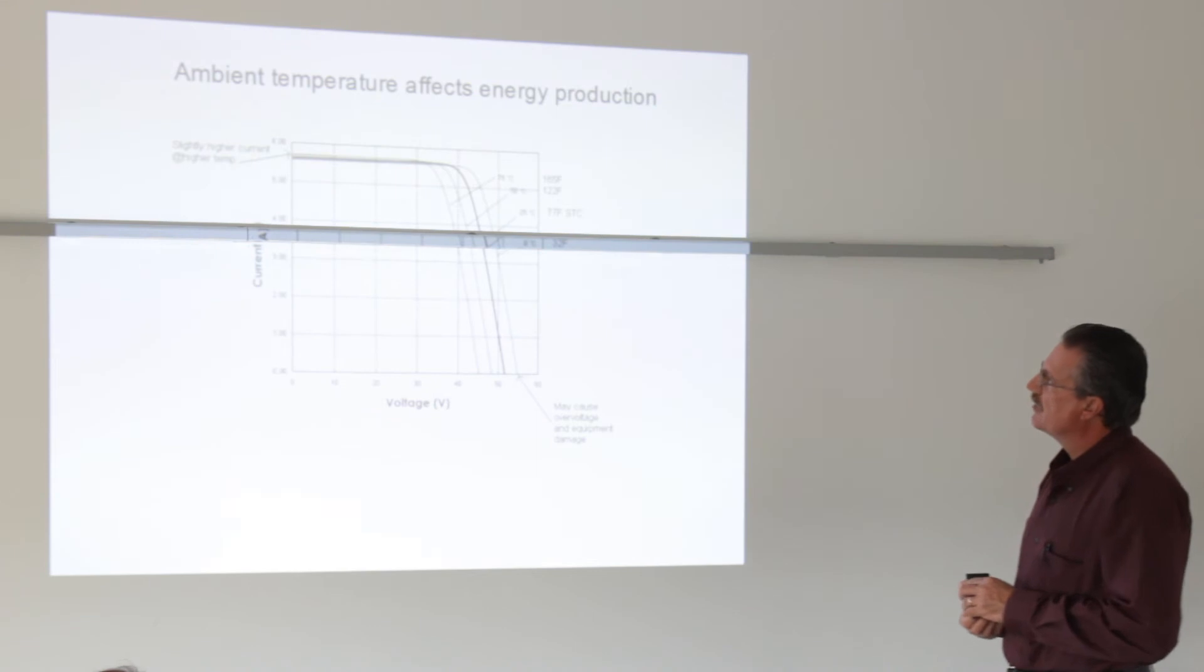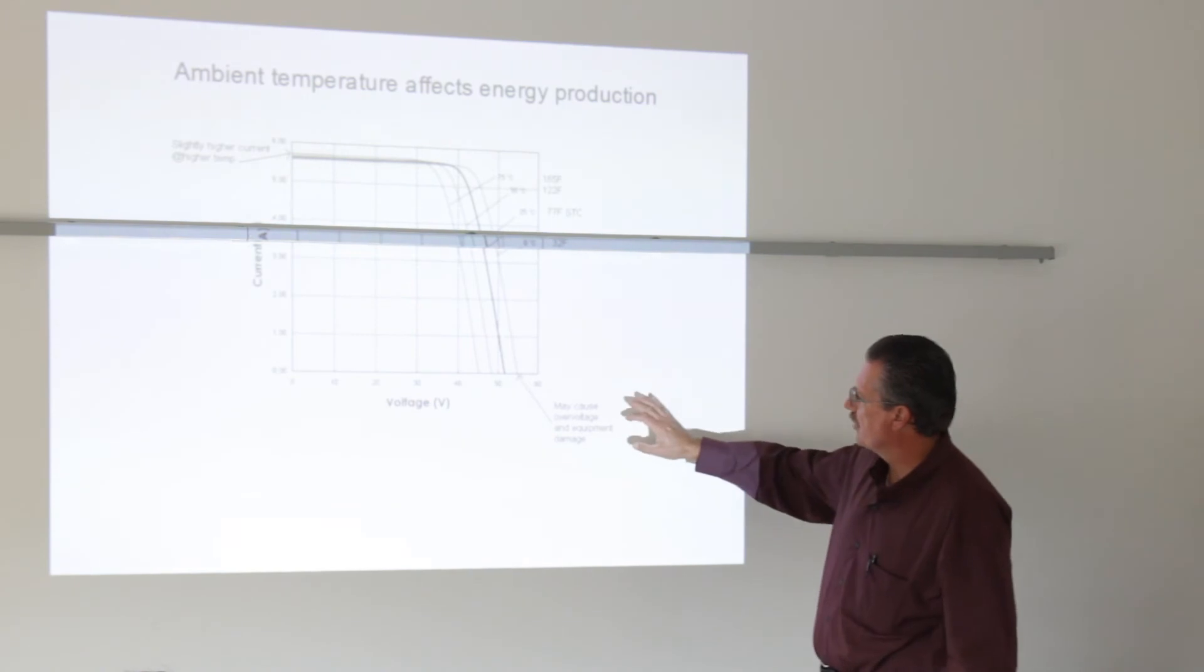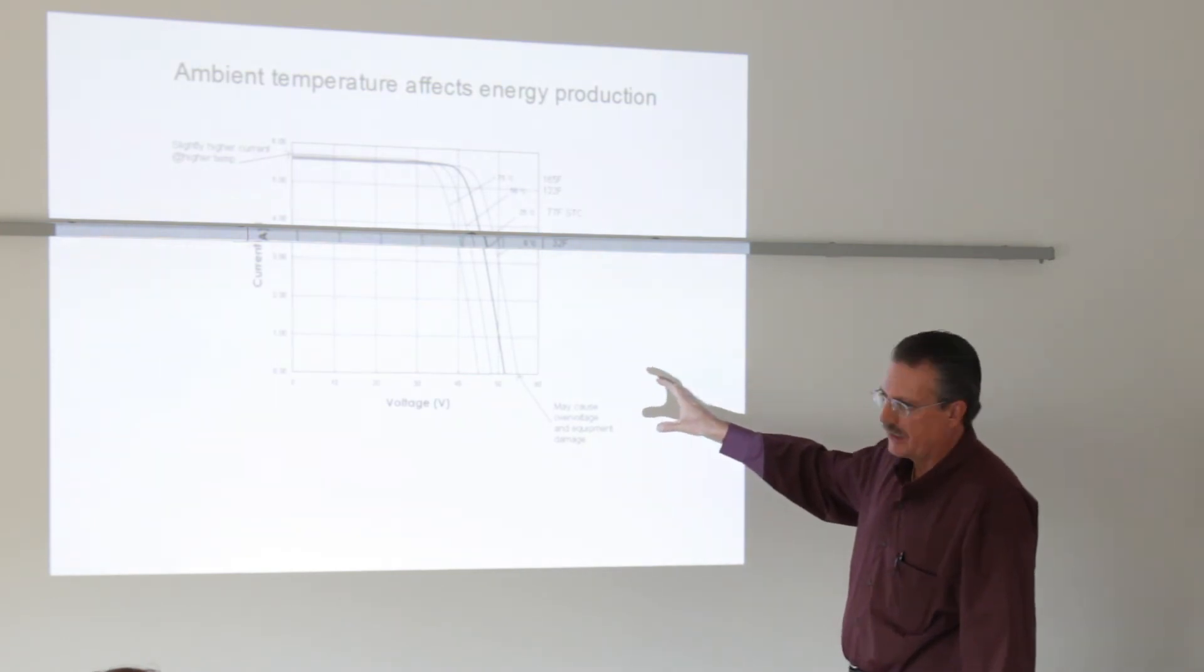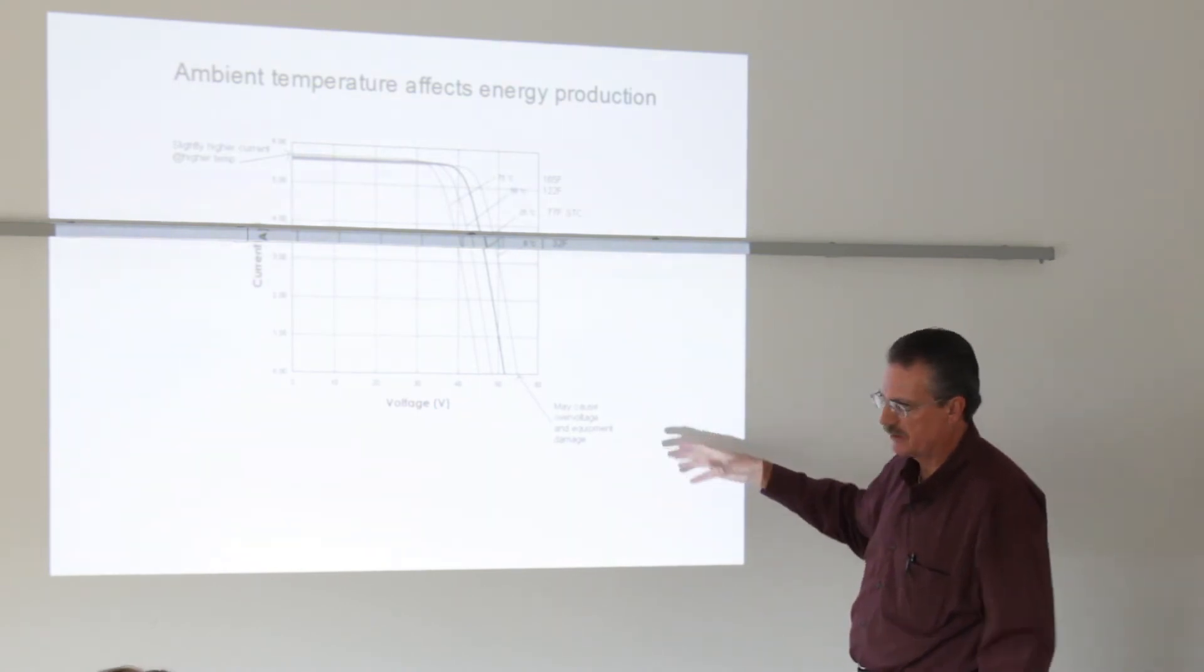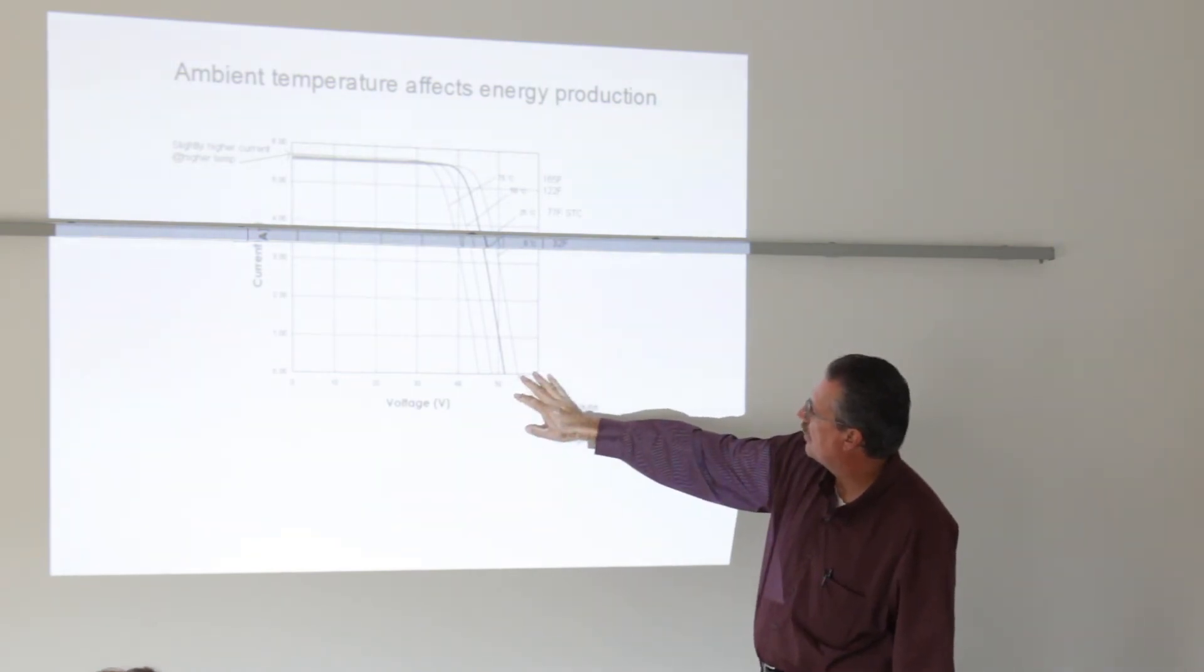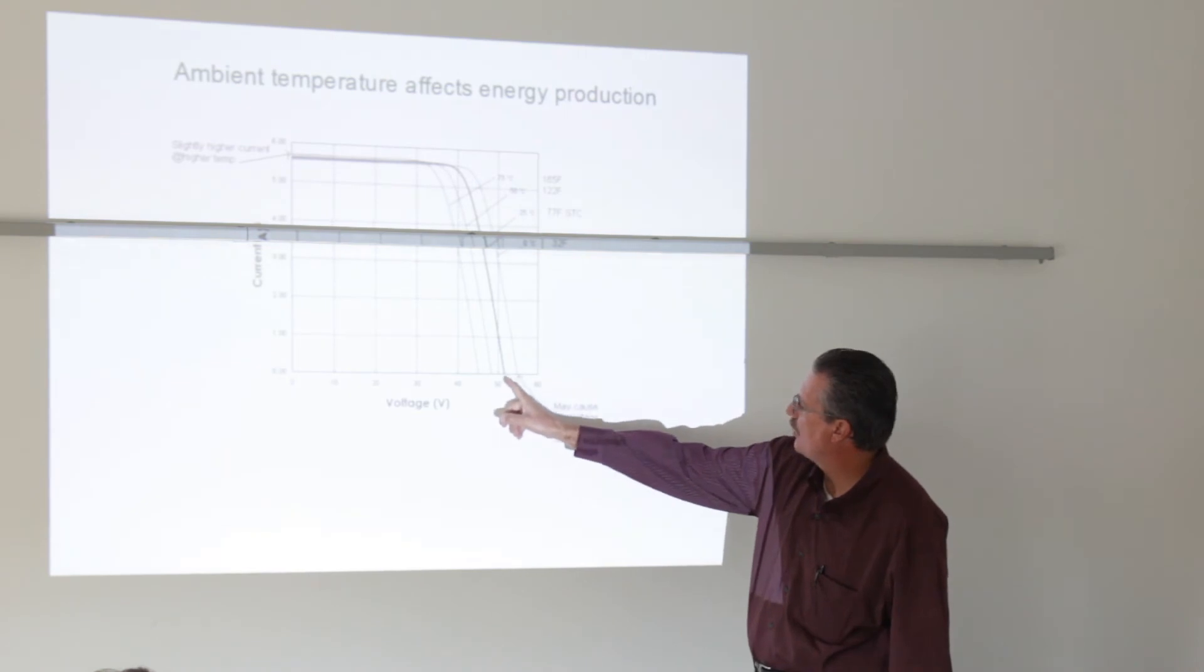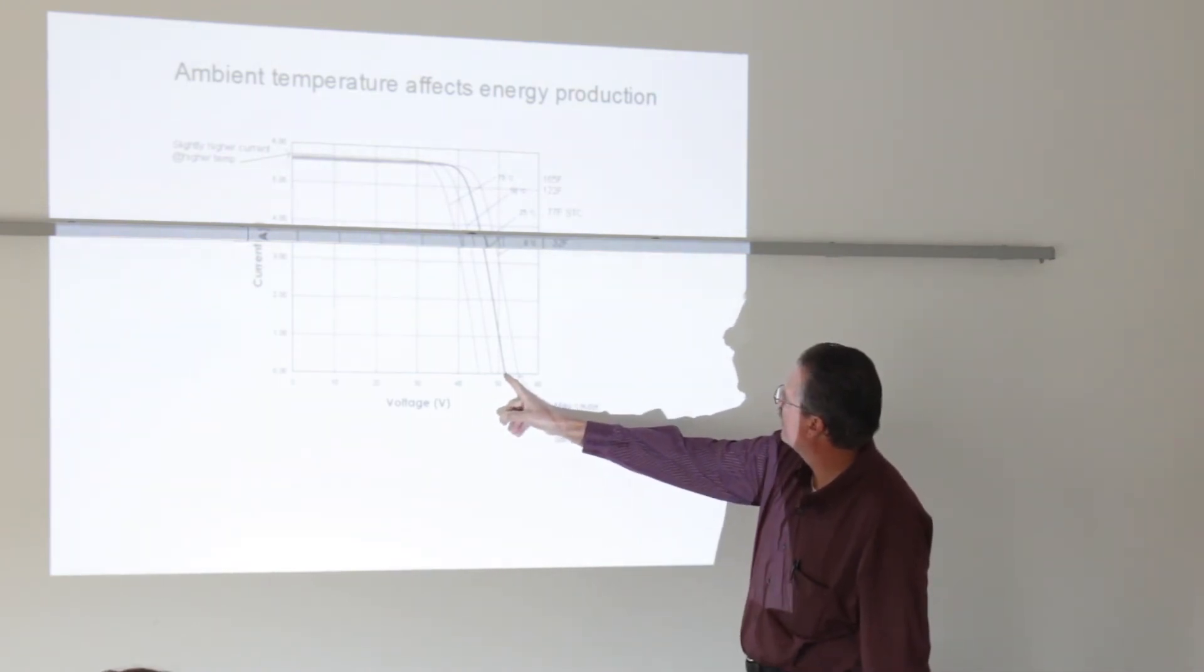I talked about how ambient temperature affects energy production. This is a Sanyo 210-watt module. I wanted just to highlight how important it is when you start factoring in various design criteria, why ambient temperature is very important. And especially with the way the National Electric Code's been rewritten for 2011, it's even more important now when it comes to the logistics of wiring and conduit and things like that. As the module gets warmer, you will have an energy decrease. As it gets colder, you will have an energy increase. Modules are tested at 25 degrees Celsius or 77 degrees Fahrenheit.